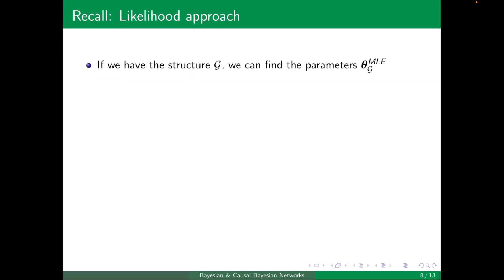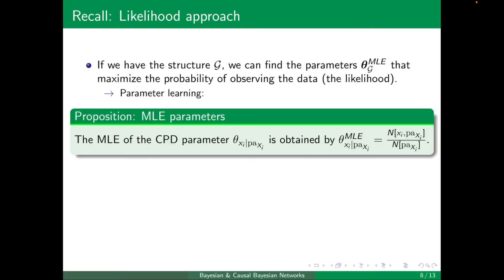Well, a Bayesian network is constructed from a structure and the parameters. In the parameter learning chapter, we saw how to maximize the likelihood of the parameters. And we saw that it was extremely simple. We just counted the number of, for each node, the number of times that the node and its parents, the specific value of the parents, appear. And we divided it by the total number of times that the parents appear.